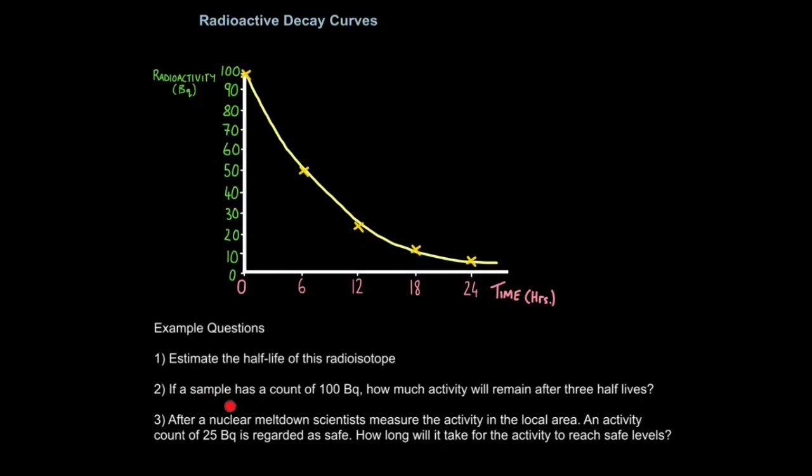Let's try another type of question. If a sample has a count of 100 becquerels, how much activity will remain after three half-lives? Well, if you remember, each one of these represents a half-life, so that's one, two, three. This time, we just go up on our graph, and we go across, and we read off it, and that gives us a reading of 12.5 becquerels. And in the final and most challenging version of these questions, it may say something like this. After a nuclear meltdown, scientists measured the activity in the local area. An activity count of 25 becquerels is regarded as safe. How long will it take for the activity to reach safe levels? So this time, we find 25 on our graph, and draw a horizontal line until we meet the curve, then go down. And we can see it's 12 days.